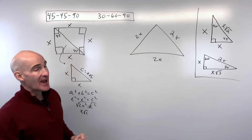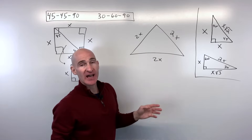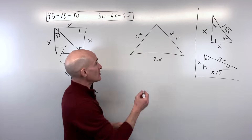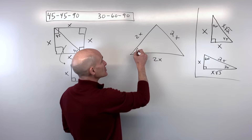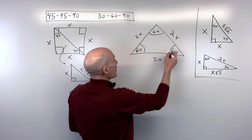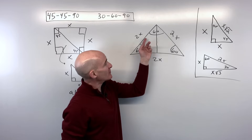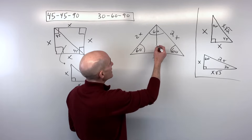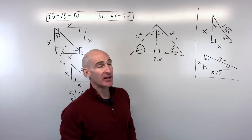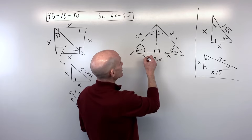Now the 30-60-90. We start with an equilateral triangle — 'lateral' means side, 'equi' means equal. If it's equilateral, it's also equiangular, so all angles are 60 degrees. If we drop an altitude in this equilateral triangle — which is a special isosceles triangle — it's perpendicular to the base (forming a right angle) and bisects the base. So if the whole base length is 2x, each half becomes x.